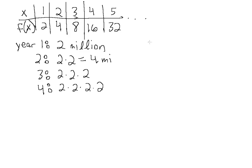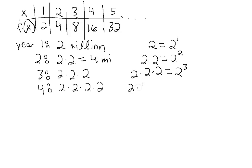Exponential notation looks like this: two to the first power equals two. Two to the second power is two times two. Two times two times two, which is our third year, is two to the third power. Two times two times two times two is two to the fourth power, and so on. So we can write a general equation: f of x equals two to the x.